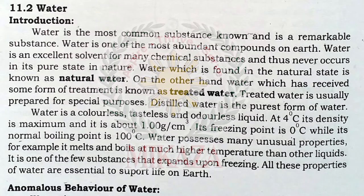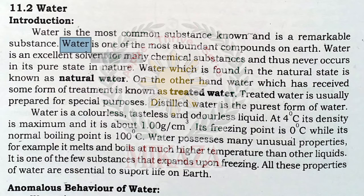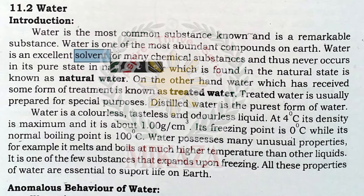We have covered the hydrogen section of the chapter on hydrogen and water. Now we're going to start the water section. Water is the most common substance known and one of the most abundant compounds on earth. Water is an excellent solvent for many chemical substances, and in its pure state, it never occurs in nature.